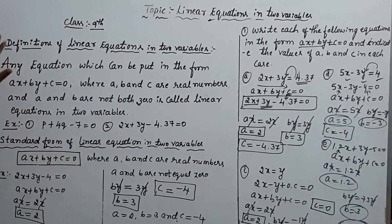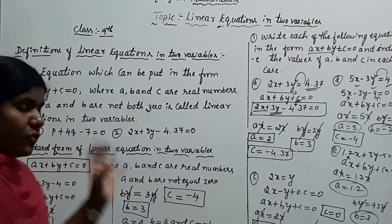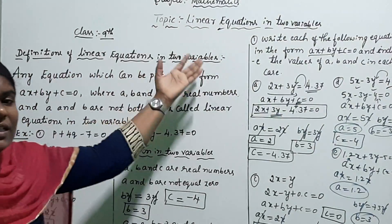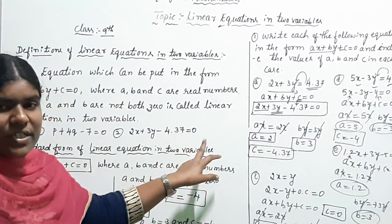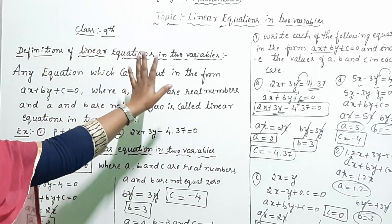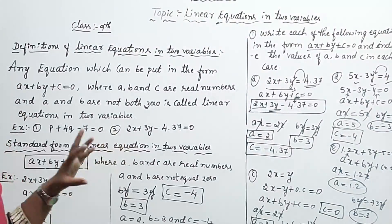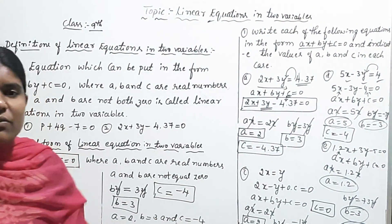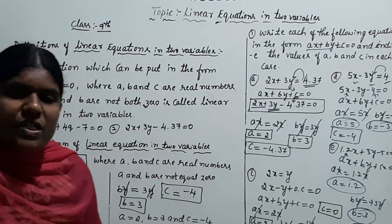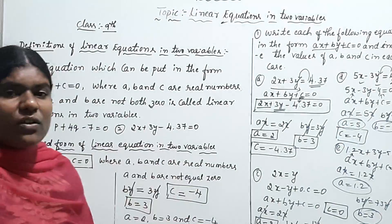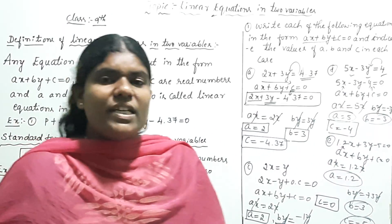Let me summarize once again. Definition: any equations with algebraic expressions containing two variables are called linear equations in two variables. Examples: P plus 4Q minus 7 equals zero; 2X plus 3Y minus 4.37 equals zero. The standard form is AX plus BY plus C equals zero, where A, B, C are real numbers and A and B do not equal zero. First verify the given expression, then find the A, B, and C values. I hope all of you understood. If you have any doubts, post them in the comment box. Thank you.